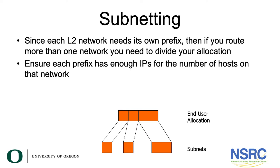A typical example is your campus network design. You would get an allocation from your regional internet registry, and you would typically take this prefix allocation and divide it into different prefixes among your different campuses or buildings. As shown on the screen, you have an end user allocation that you would like to divide into three subnetworks. These networks don't have to be the same size, as you can see on the screen.